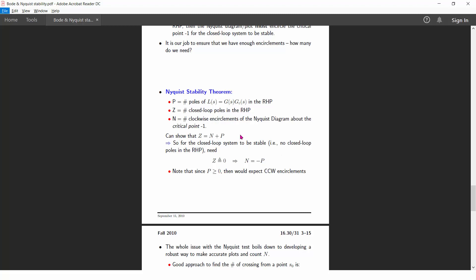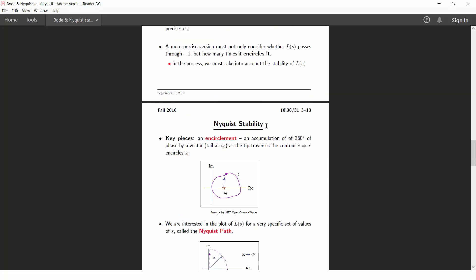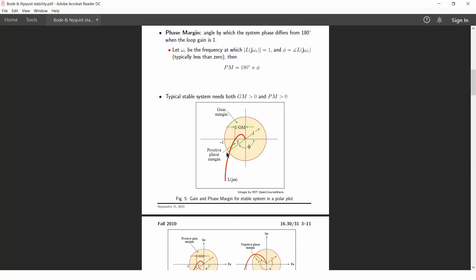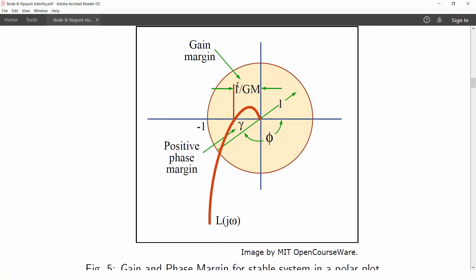So if the gain of the transfer function is multiplied by the factor, let's say 1 upon GM, and then is plotted on the plane, the plot would have passed through this point. That is it would have bring the plot to the verge of instability. So this is the point where if the plot passes could make the system marginally stable, and beyond this point will make the system unstable.